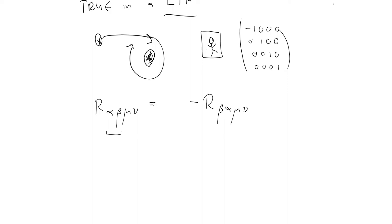And the metric tensor is symmetric. So all that happens is it changes sign. So R alpha beta mu nu equals minus R beta alpha mu nu.